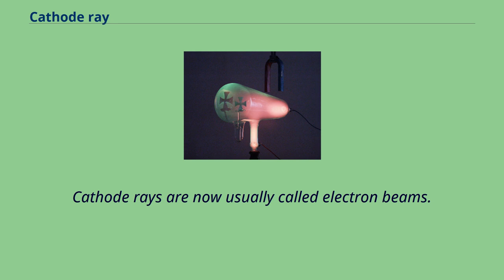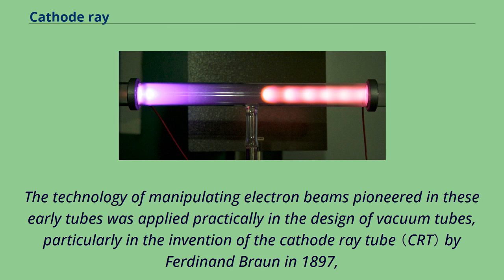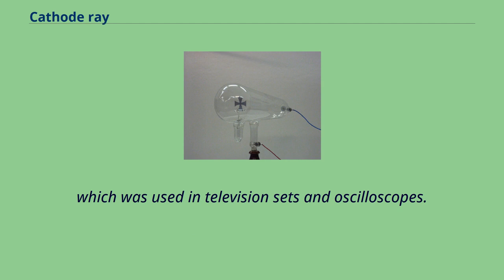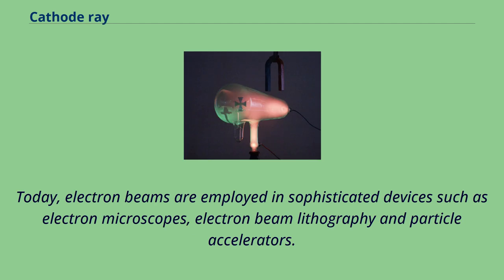Cathode rays are now usually called electron beams. The technology of manipulating electron beams pioneered in these early tubes was applied practically in the design of vacuum tubes, particularly in the invention of the cathode ray tube by Ferdinand Braun in 1897, which was used in television sets and oscilloscopes. Today, electron beams are employed in sophisticated devices such as electron microscopes, electron beam lithography and particle accelerators.